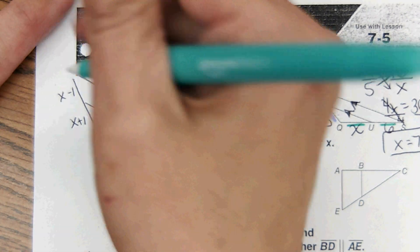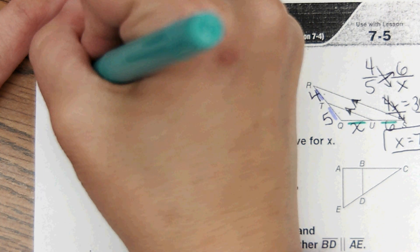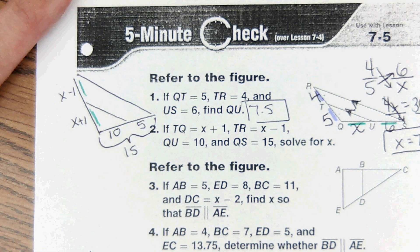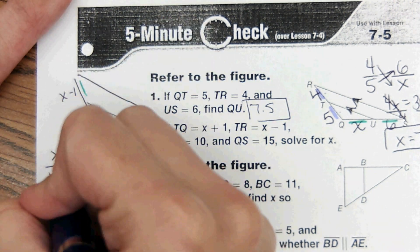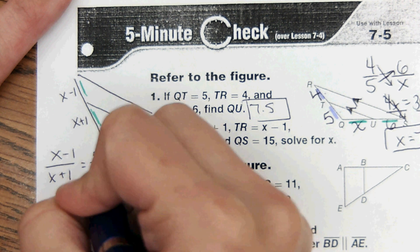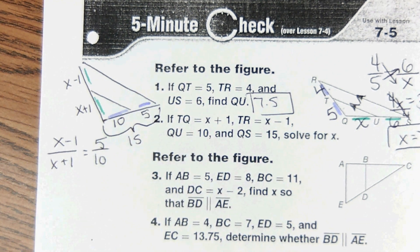Okay, so just like I did before, I'm going to do this over this equals this over this. So x minus one over x plus one equals five over ten.